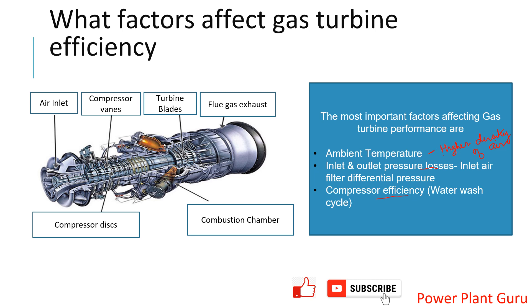Regarding air pressure coming to the gas turbine — if we have a deficiency in sucking air, for example our inlet air filters are clogged, that extra amount of energy will go into sucking the air and come out of the total output, giving you a reduction in output and efficiency. Similarly, if you have a high pressure drop at the outlet — this happens when you have an HRSG connected with the gas turbine — there is increased restriction in the flow, which also impacts gas turbine performance. That is where inlet and outlet air pressure comes into the picture.